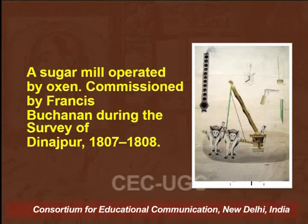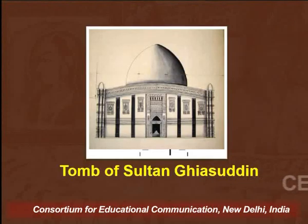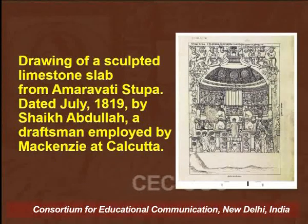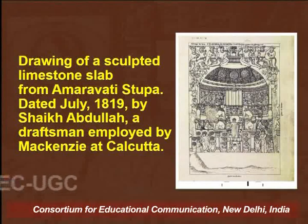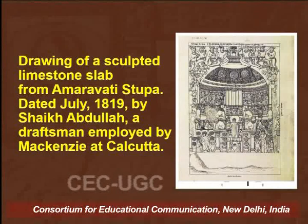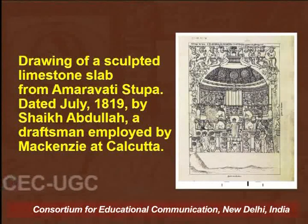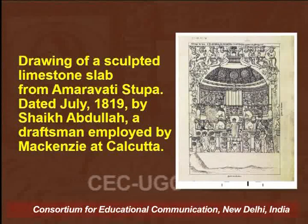Here the emphasis is more on the concept. This is another example — the Tomb of Sultan Ghiyasuddin. This is the visual of a drawing of a sculpted limestone slab from Amravati Stupa, which was developed in 1819 by the artist Sheikh Abdullah, who was a draftsman employed by Mackenzie at Calcutta.